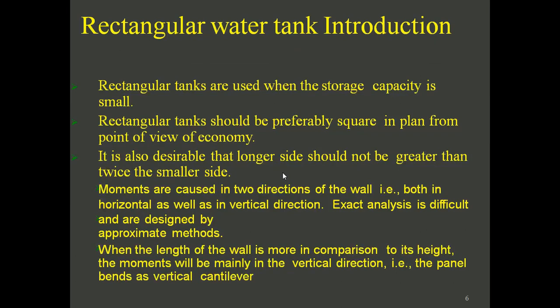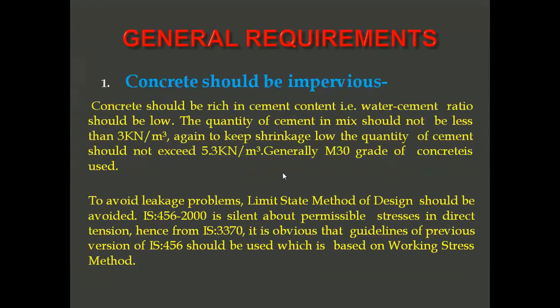Rectangular tanks are used when the storage capacity is small. Rectangular tanks should preferably be square in plan form for economy — selecting square dimensions is also called a smart selection in design. It is also desirable that the longer side should not be greater than twice the smaller side. Moments are caused in two directions of the wall — both horizontal and vertical. Exact analysis is difficult, so approximate methods are used. When the wall length is more compared to height, moments are mainly in the vertical direction and the panel bends as a vertical cantilever.